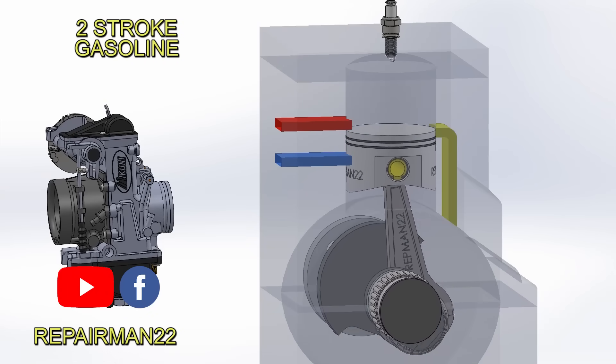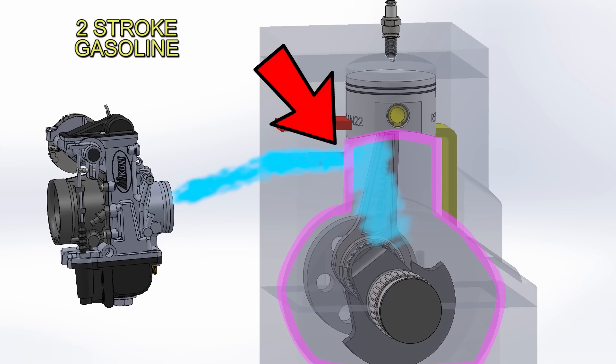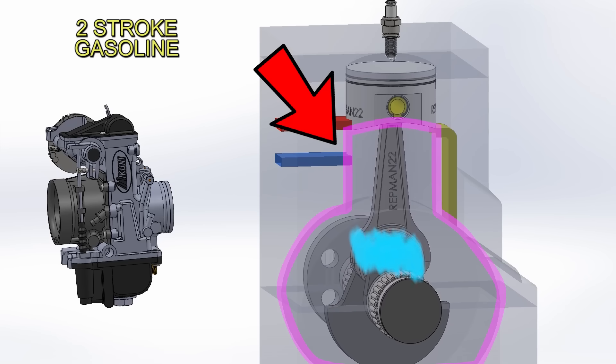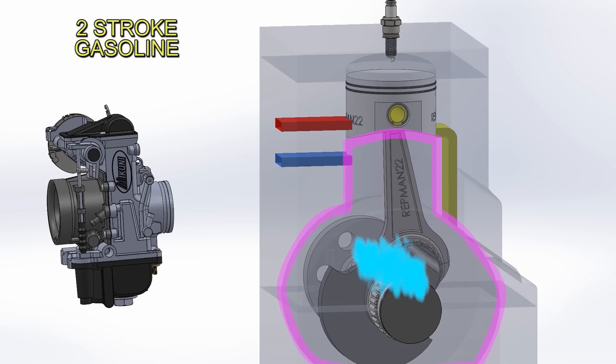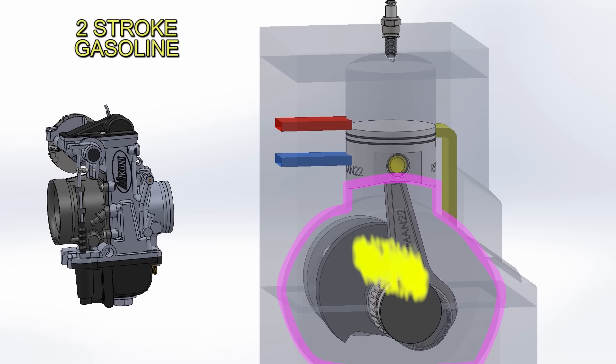First, we'll start with a conventional two-stroke engine so we can later understand its differences. When the piston goes up, it generates a vacuum, causing the mixture to enter the crankcase. Then, when the piston goes down, it pre-compresses the mixture and sends it to the cylinder through the ports.